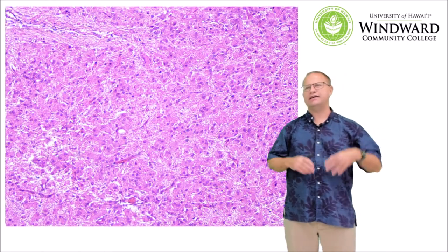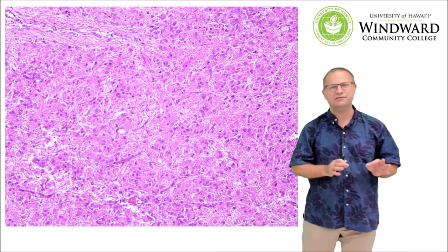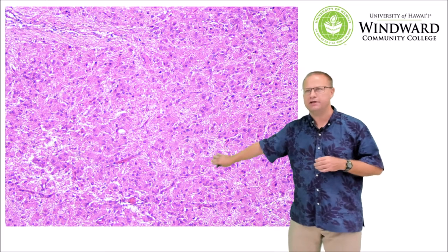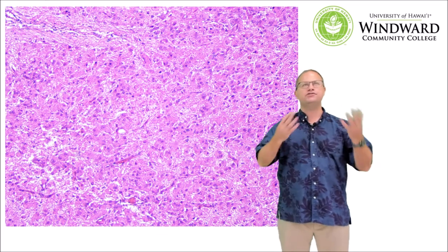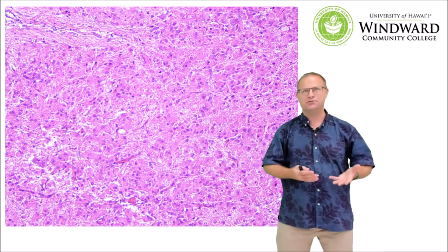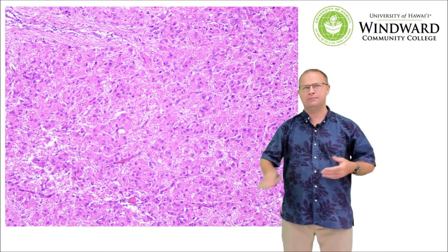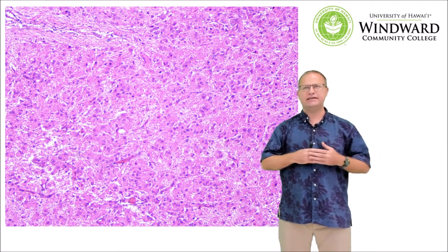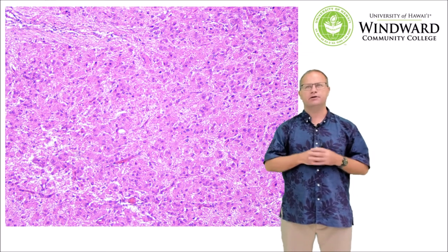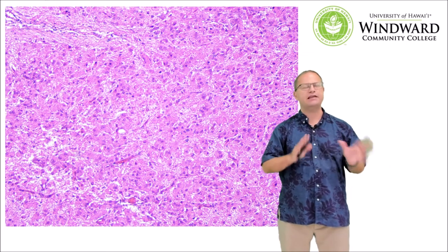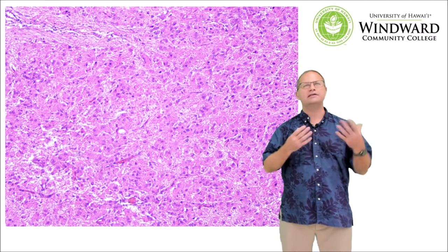The histology of the pineal gland is rather homogenous. What you can see here is lots of pinealocytes, and these pinealocytes secrete melatonin in relation to light levels. As we get closer to nighttime, the levels of melatonin production go up, and as we get closer to daytime, melatonin production goes down. So melatonin helps to regulate our circadian rhythm or wake-sleep cycles.